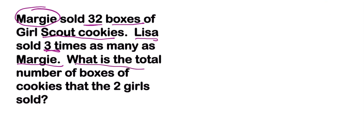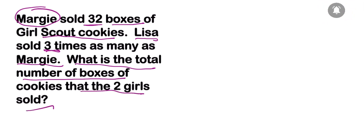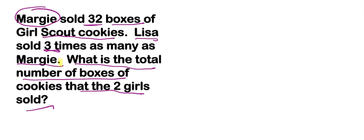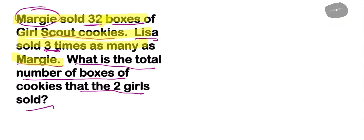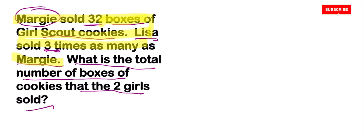The question asks: what is the total number of boxes of cookies the two girls sold? There are two steps to this problem. First, we need to figure out how many boxes Lisa sold. Once we figure that out, we can find the total number between both girls.